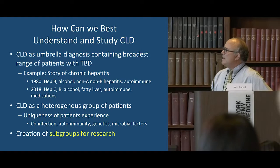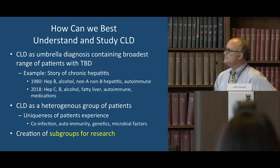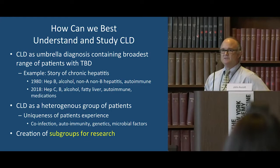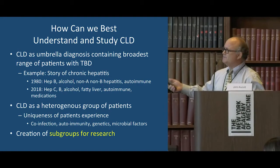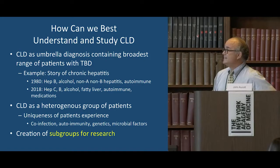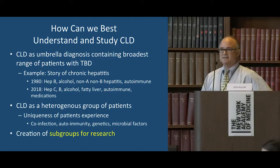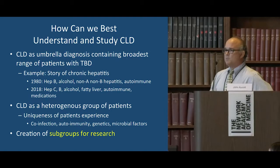How can we best understand and study chronic Lyme disease? I look at chronic Lyme disease as an umbrella diagnosis that contains the broadest range of patients with tick-borne disease. When I was a medical student in the 1980s, we saw lots of patients with what was called chronic hepatitis, and there was a big group called non-A, non-B hepatitis — they didn't have hepatitis B or A and we didn't know what they had. There were endless debates about treatment, but the bottom line was we had no idea. Now, in 2018, we know the vast majority of people with non-A, non-B hepatitis have hepatitis C. We defined that subgroup, and the disease is curable now. So defining subgroups is the basis of the way I was trained, and that's the same way I approach chronic Lyme disease.